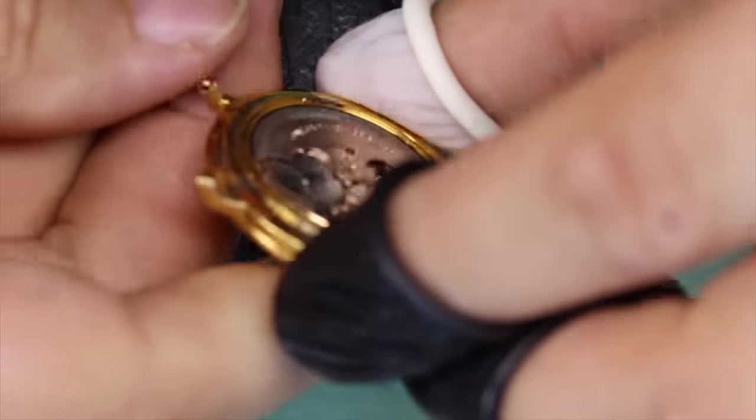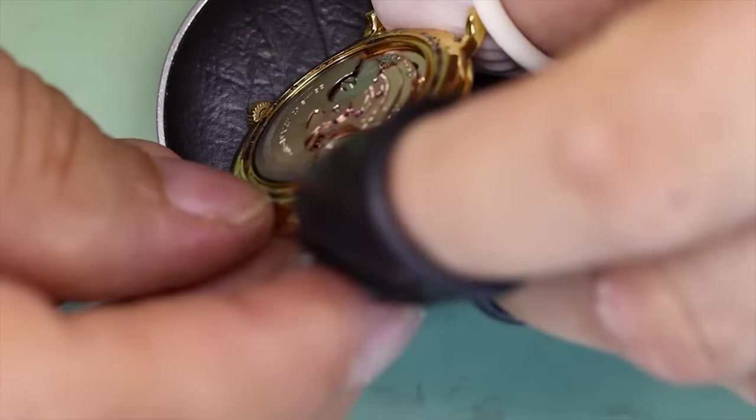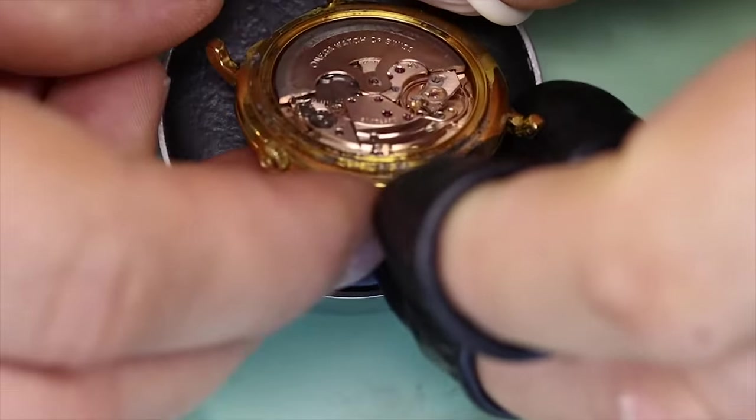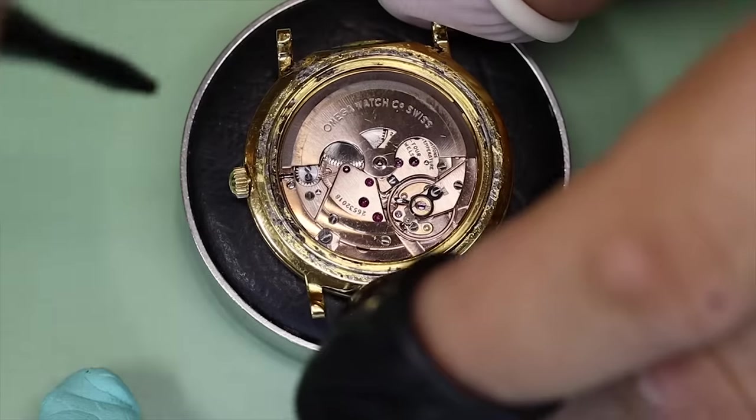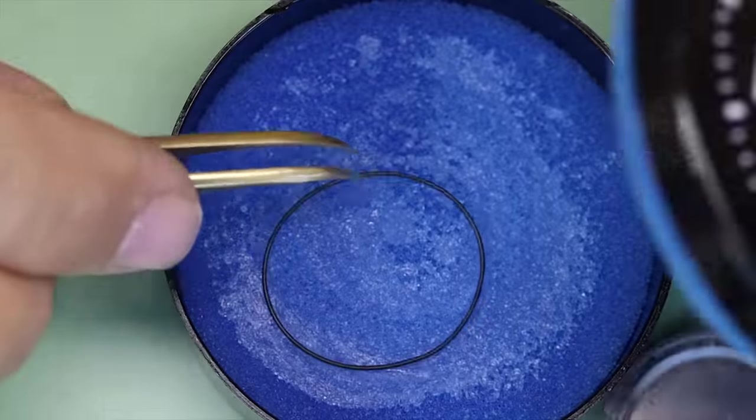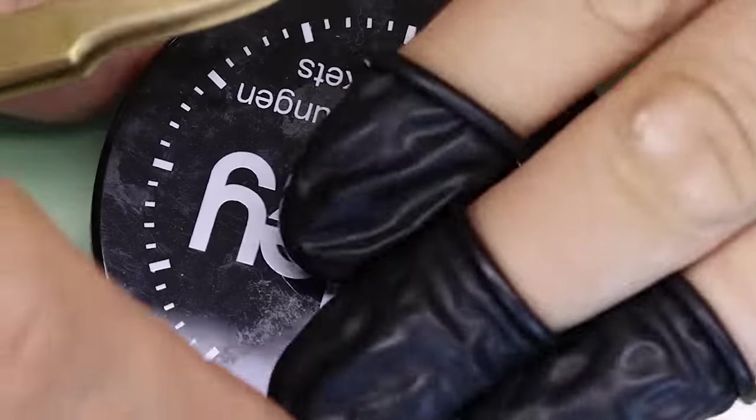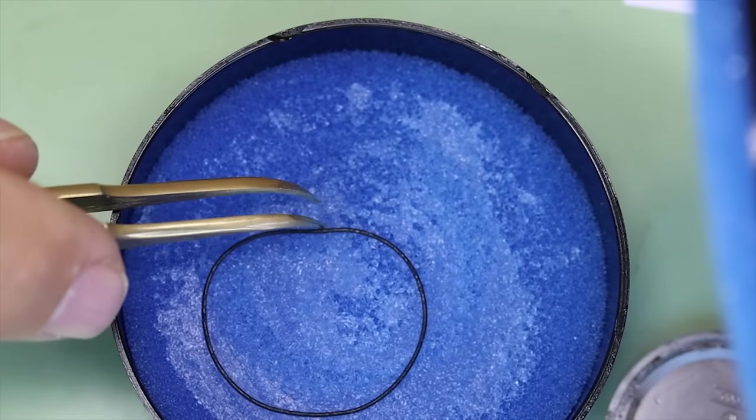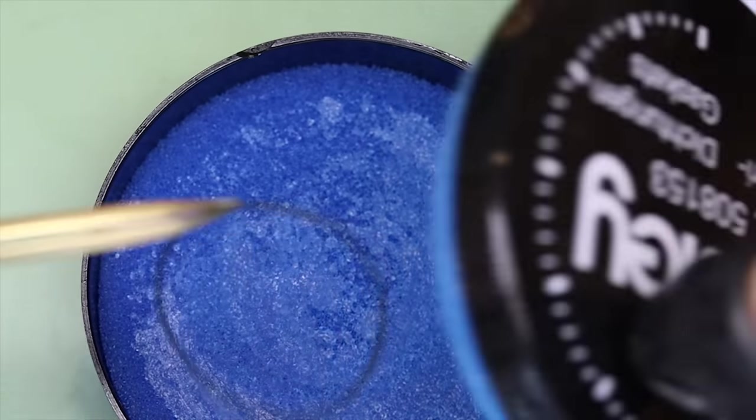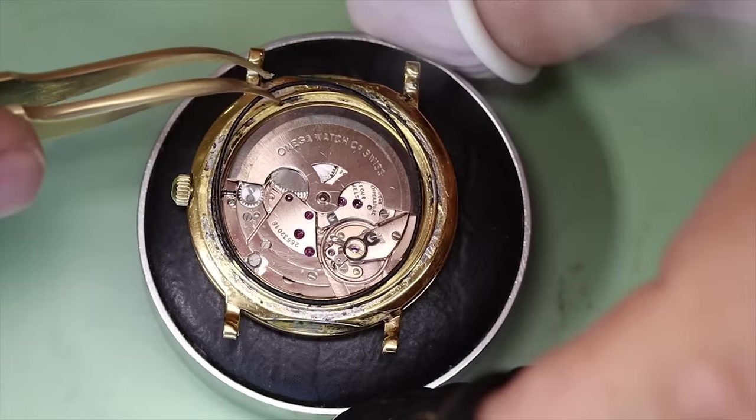For the rotor, there's a rule of thumb that the rotor should stay at the bottom if you rotate the case like we're trying here. So that's one easy way to check it. Of course, going to run a power reserve test on it anyway. But for now, that gives us a good indication that it works as it should.